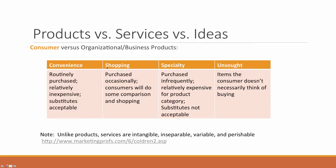Shopping products are those that are purchased occasionally, and consumers will do some comparison shopping, so they'll probably be using a different type of problem-solving behavior. Specialty products could be either convenience products or shopping products, but they're purchased less frequently and are relatively expensive for the product category, so they're seen as very special or very unique.